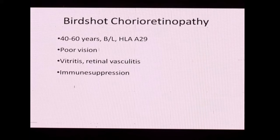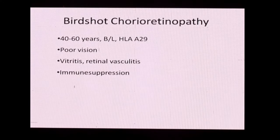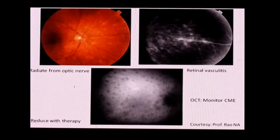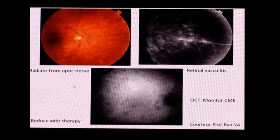Birdshot chorioretinopathy is not commonly seen in our part of the world due to the absence of HLA-A29 predisposition. These patients present with poor vision, significant vitritis, and retinal vasculitis, requiring immune suppression. Classically there are creamy lesions radiating from the optic nerve head. ICG shows hypofluorescent lesions which tend to reduce with therapy, and fluorescein angiography is used to monitor response to immunosuppression.